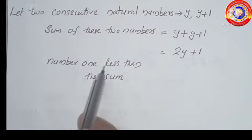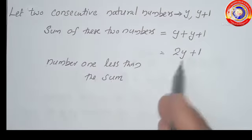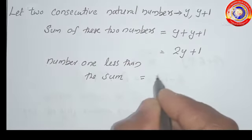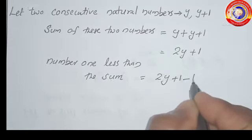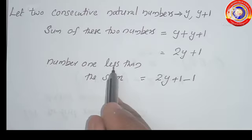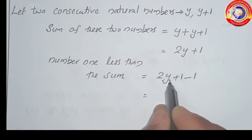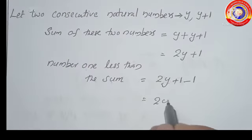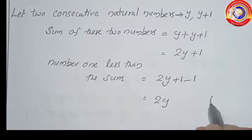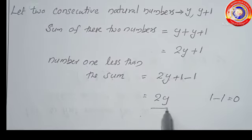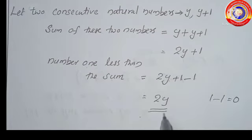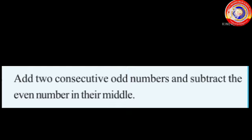In the question we have to find the number 1 less than this sum, so that means 2y plus 1 minus 1. Since 1 minus 1 is 0, the result is 2y.